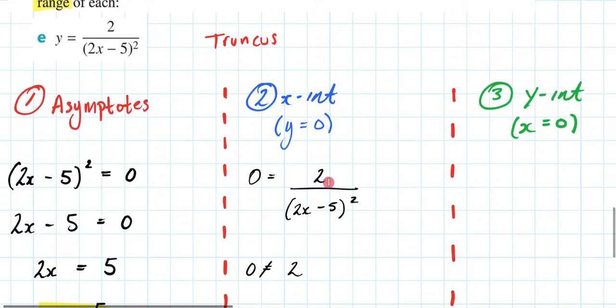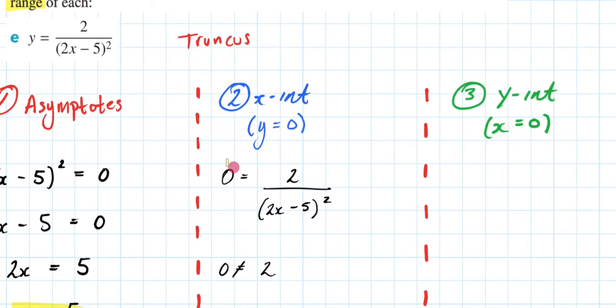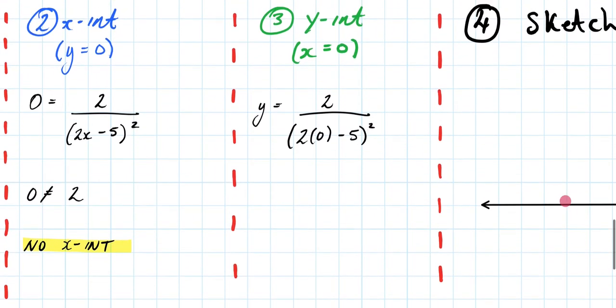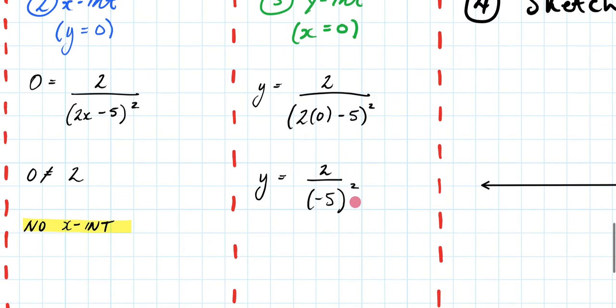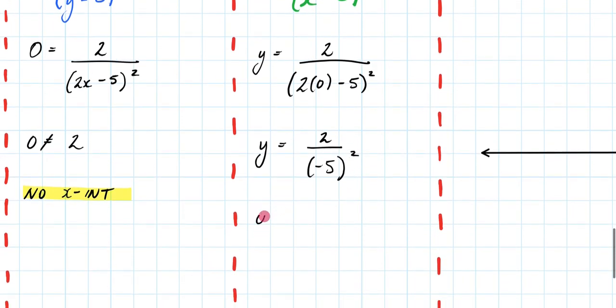Let me now find what my y-intercept will be. My y-intercept will be when x equals 0. So I'm going to write y equals 2 over 2 times 0 minus 5 squared. So that's going to be y equals 2 over minus 5 squared, which will be y equals 2 over 25. So that will be my y-intercept.